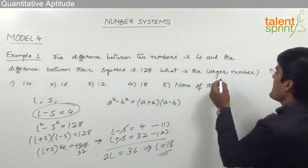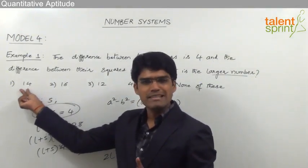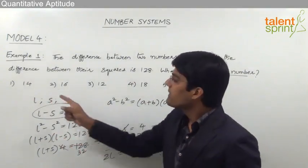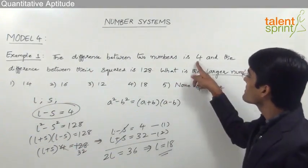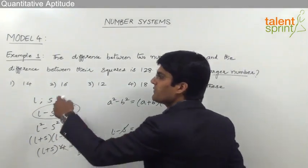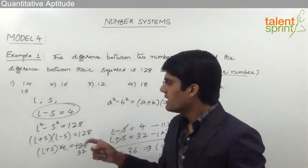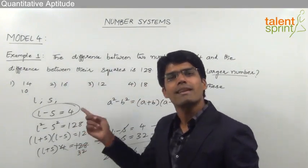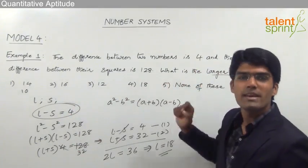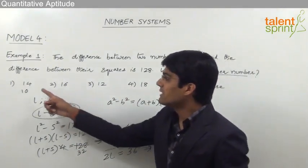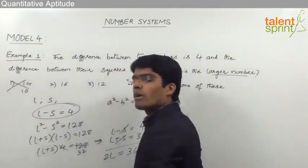If option 1 is correct, the larger number is 14, so the smaller number must be 10, since their difference is 4. Now, 14² = 196 and 10² = 100, giving a difference of 96. But the question says the difference between their squares is 128, so this option does not satisfy the condition and can be ruled out.